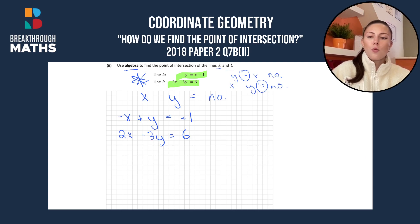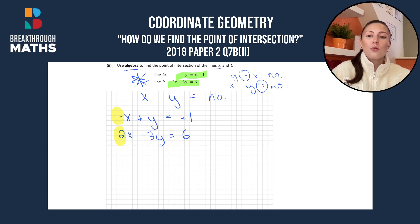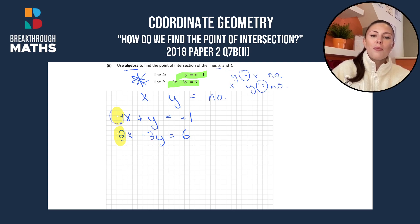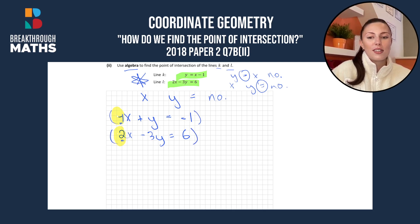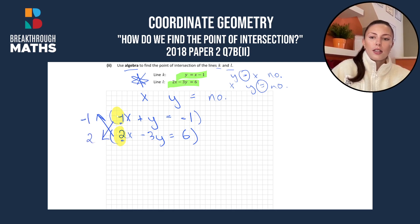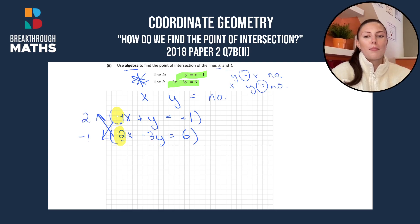Now we look at the numbers in front of the x's. The number in front of the first x is minus, meaning -1, since -x is the same as -1x — there's an invisible 1 there. And in front of this x we have 2. Remembering back to simultaneous equations, which is how we find the point of intersection, we multiply each line by the x coefficient of the other line. So the top line is multiplied by 2 and the bottom line by -1.